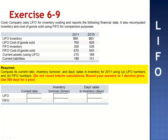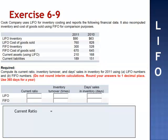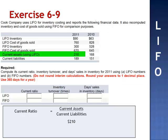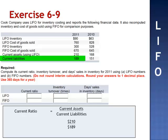We're asked to compute the current ratio, inventory turnover, and days sales in inventory for 2011 using LIFO numbers and FIFO numbers. The current ratio is total current assets divided by total current liabilities. Current assets are $210,000 using LIFO, and current liabilities are $189,000. $210,000 divided by $189,000 gives a current ratio of 1.1.